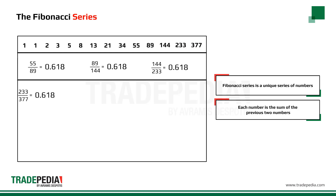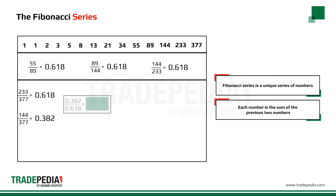What about if we were to leave one number in the middle empty and now find the ratio between 144 and 377? We find the number 0.382. Now if we divide 0.382 by 0.618, again we would find 0.618.